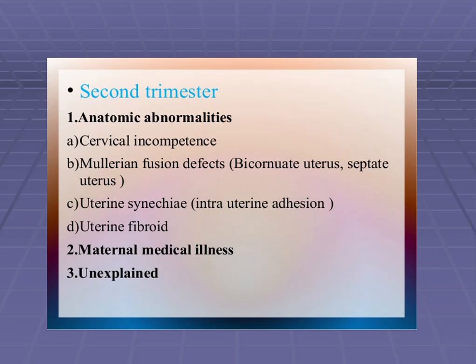Other second trimester causes include Mullerian fusion defects such as bicornuate uterus and septate uterus, intrauterine synechiae where two tissues or structures join together, uterine fibroids, and maternal medical illness — if the mother is suffering from any serious disease, it can lead to abortion. Lastly, unexplained — the cause is not known or identified.